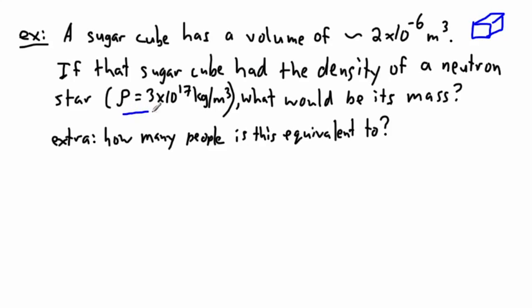If that cube had the density of a neutron star - this is one of the estimated densities of a neutron star - they're thought to have around 3 times 10 to the 17 kilograms per meter cubed. The question is, what would be the mass you would need in order to have a sugar cube that has the density of a neutron star? And then after that, we're going to see how many people is that?